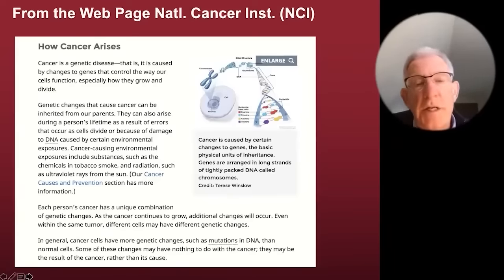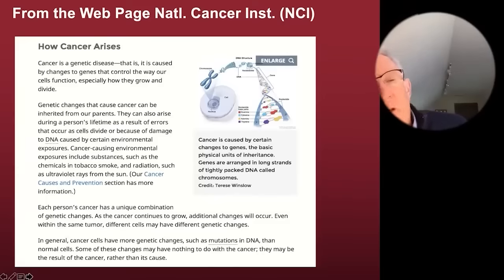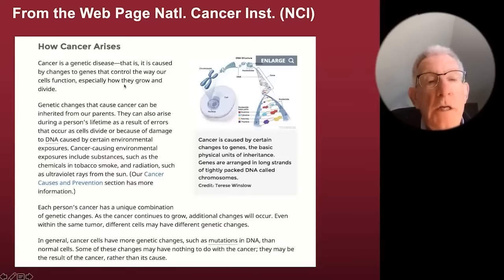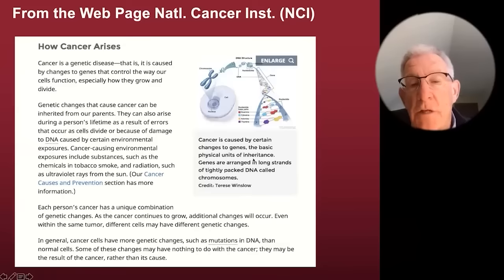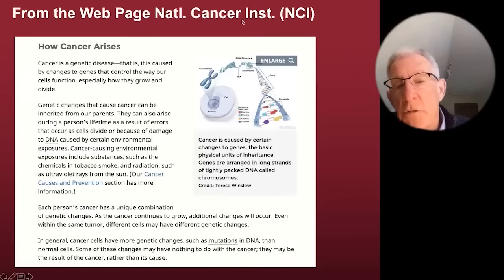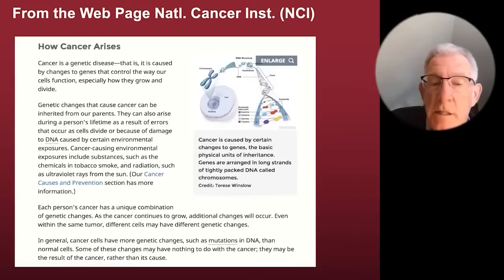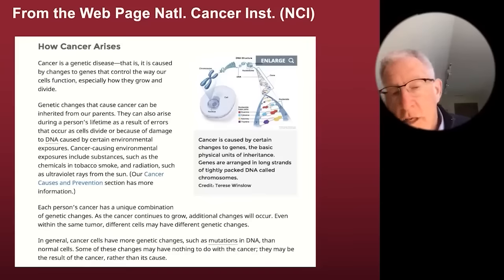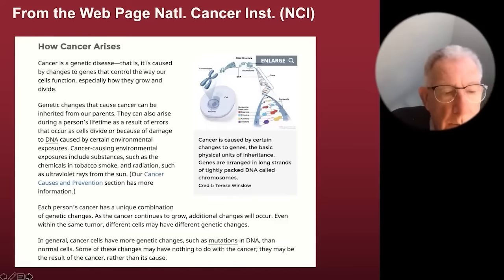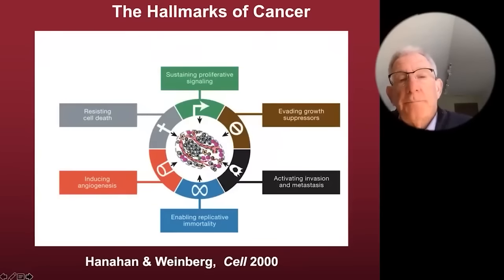The National Cancer Institute website states: 'Cancer is a genetic disease — it is caused by changes in genes that control the way our cells function, especially how they grow and divide.' When medical schools, universities, and the National Cancer Institute all say the same thing, this becomes a dogma — an irrefutable truth that no one begins to question. The hallmarks of cancer — sustaining proliferative signaling, evading growth suppressors, activating invasion and metastasis, enabling replicative immortality, inducing angiogenesis, and resisting cell death — are all said to be controlled by gene mutations according to the somatic mutation theory.